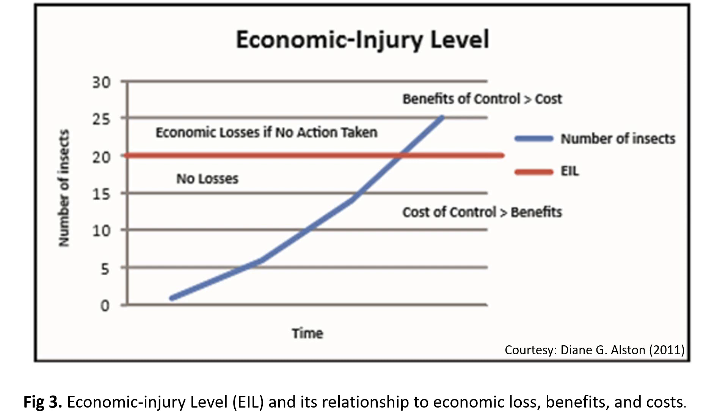Let's look at the above discussions in graphic form. Figure 4 is the graphic representation of the economic injury level and its relationship to economic loss, benefits, and cost. The graph illustrates the change in insect population against time. The EIL is indicated by the red line and the blue line indicates the number of insects. Below the EIL, no losses occur; therefore, taking control actions here will result in higher costs than the benefits of management.